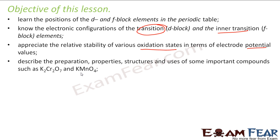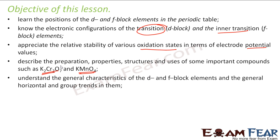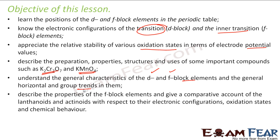We'll describe the preparation and properties of important compounds like K2Cr2O7 (potassium dichromate) and KMnO4 (potassium permanganate). We'll understand the characteristics of D and F block elements and the general trends. We'll also study the properties of F block elements and give a comparative account of lanthanides and actinides — comparing electronic configuration, oxidation states, and chemical behavior. This is what we'll study in this chapter.